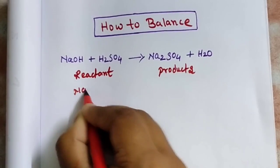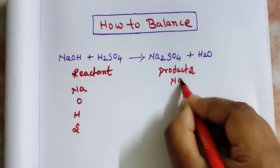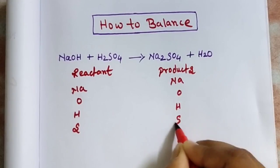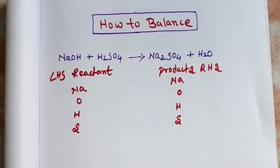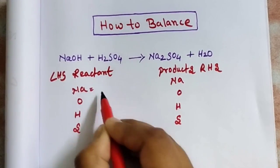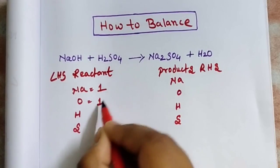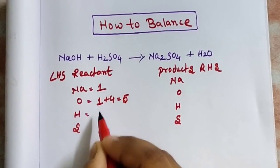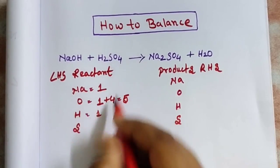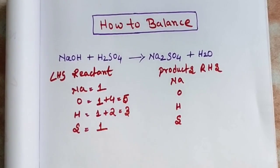Check which atoms are present: sodium, oxygen, hydrogen, and sulfur — similarly for RHS as well. Now count the number of atoms on the LHS. Sodium is one, oxygen is one plus four so total oxygen is five, hydrogen is one plus two so total hydrogen is three, and sulfur is one.